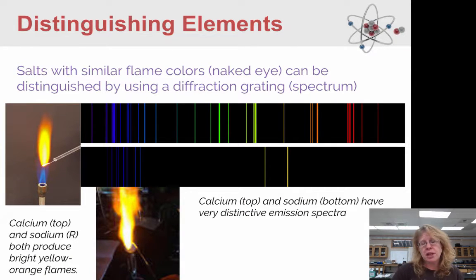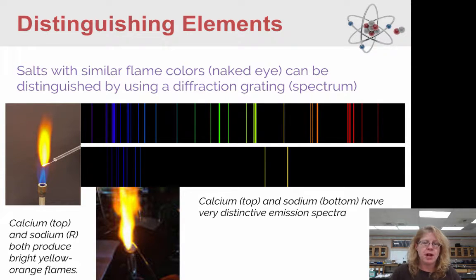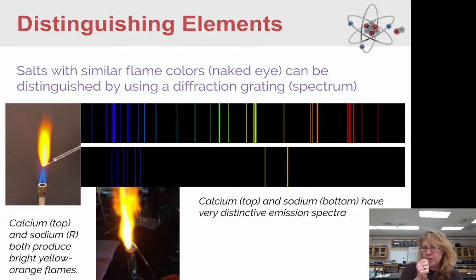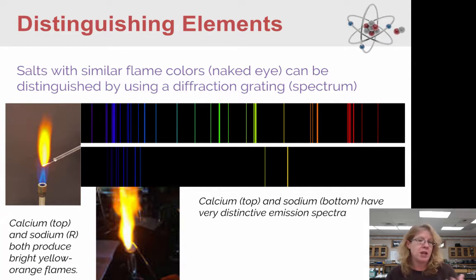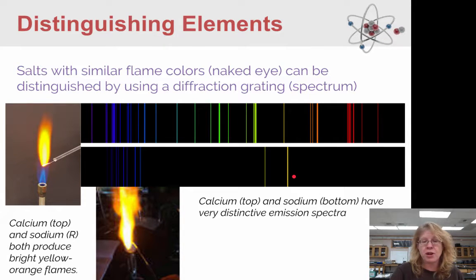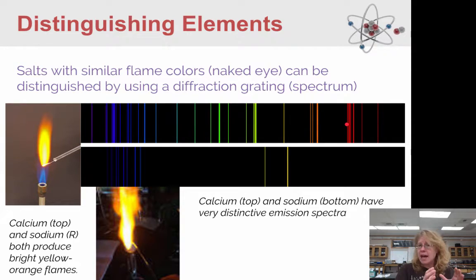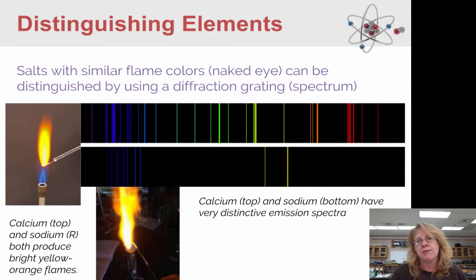Distinguishing elements by flame color alone is easy if the colors are really different. But if they're similar — like sodium and calcium — it can be difficult using just your eyes. That's where combining eye color with a diffraction grating becomes very useful. For example, if I use a diffraction grating on a yellowish-orange flame and see just a yellow line, I know it's sodium. If I see a yellowish-orange flame and through the diffraction grating I'm seeing stuff in the greens, blues, and oranges as well, then that's calcium. The naked-eye color narrows it down, and the diffraction grating helps distinguish between very similar ones.